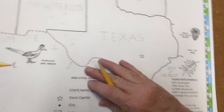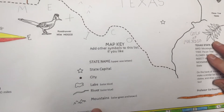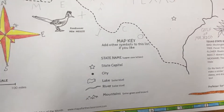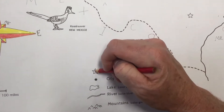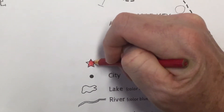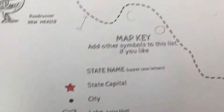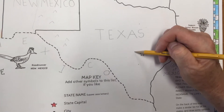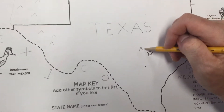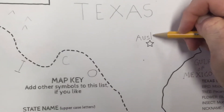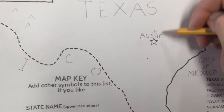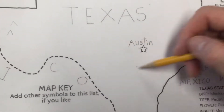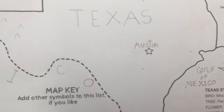We also have the state capital in the map key. I like to use red for the state capital, so I'll draw that star in red. Let's focus on Texas and label the state capital — the capital of Texas is Austin. I'll put the label right above the star. You can put the label above, to the right, below, or to the left of the star, depending on how much space you have.